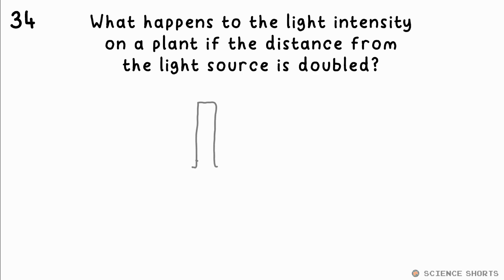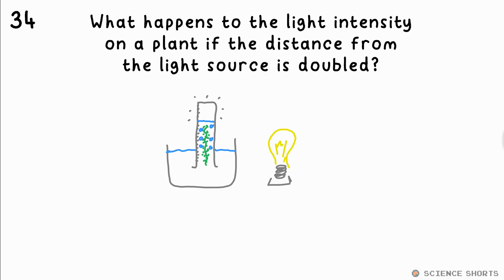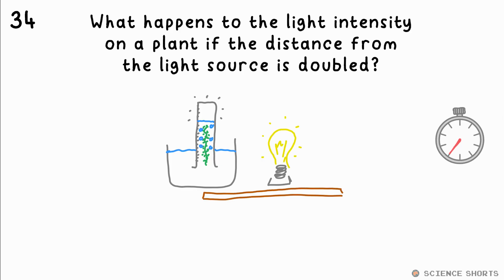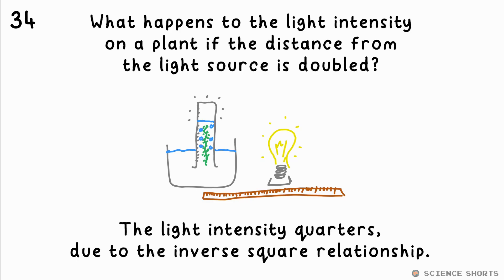Question 34. What happens to the light intensity if you move a plant twice as far away from the light source? The light intensity decreases to a quarter — it quarters. That's because light intensity and distance follow an inverse-square relationship.